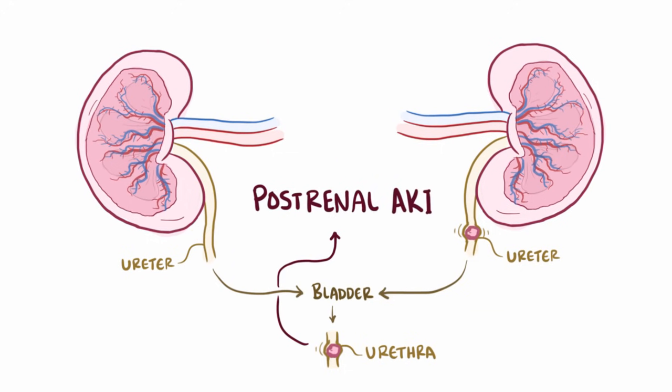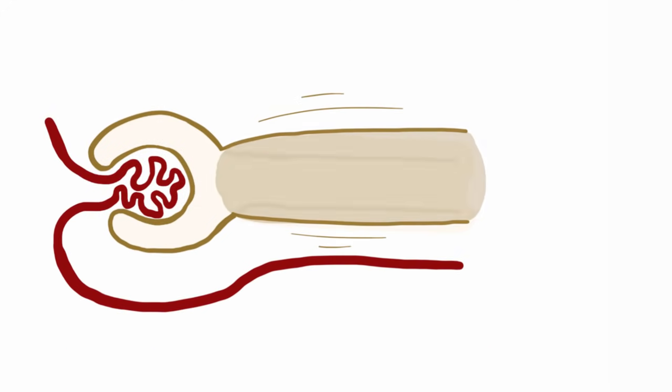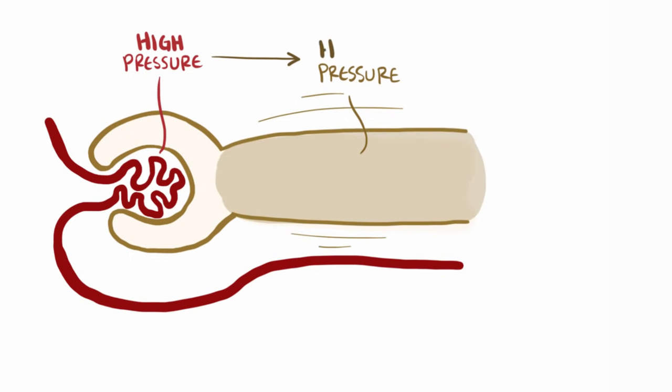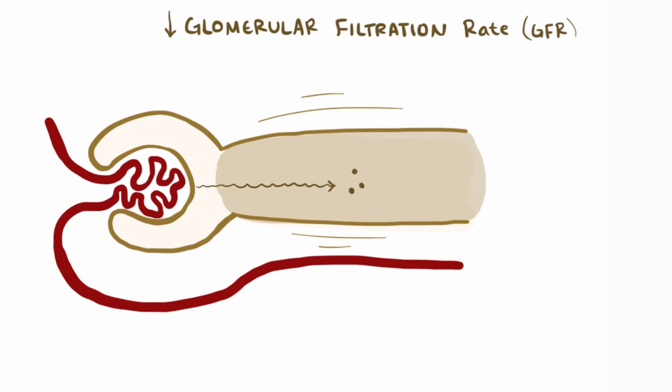Whatever the obstruction is, it ultimately causes this buildup of urine and pressure that backs up into the kidney, all the way to the millions of tiny renal tubules. Normally, filtration moves fluid from the relatively high-pressure arteriole to the low-pressure renal tubule. But this backup causes an increase in renal tubule pressure, which reduces the pressure gradient and lowers the amount of fluid that filters across. Which lowers the glomerular filtration rate, or GFR, which is how much blood the kidneys filter in milliliters through their glomeruli per minute.